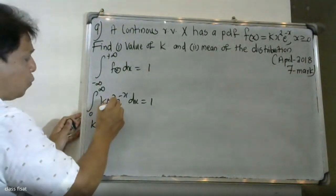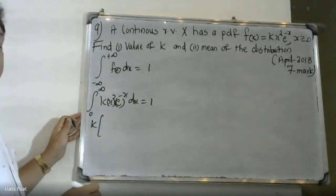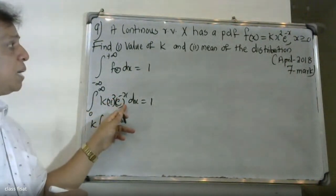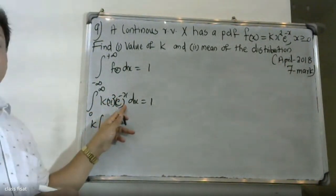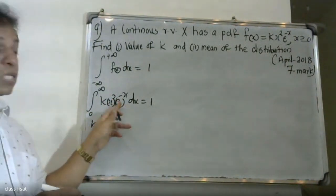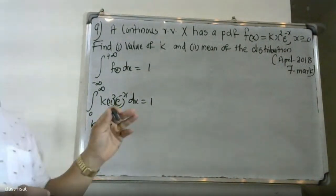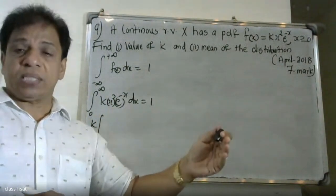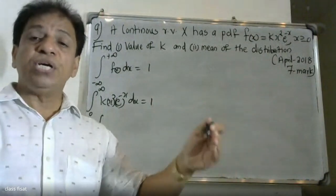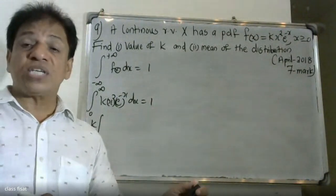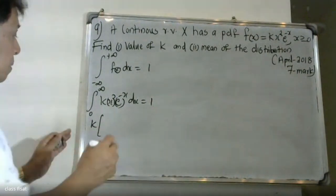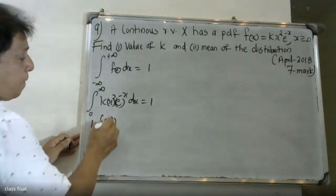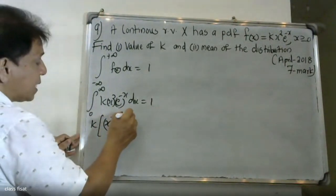We apply the ILATE rule for integration by parts. Here x squared is the first function and e raised to minus x is the second function.